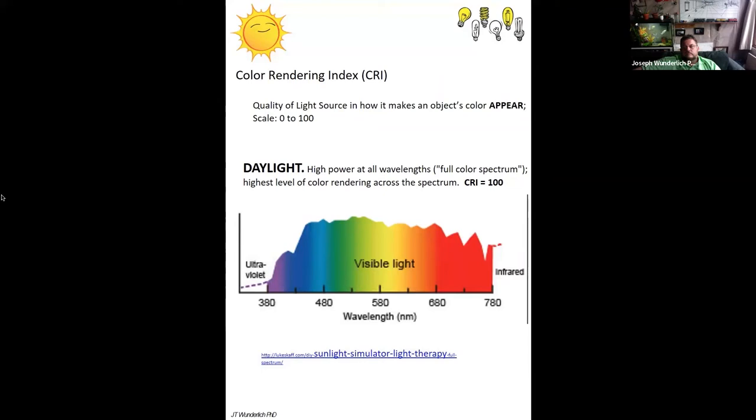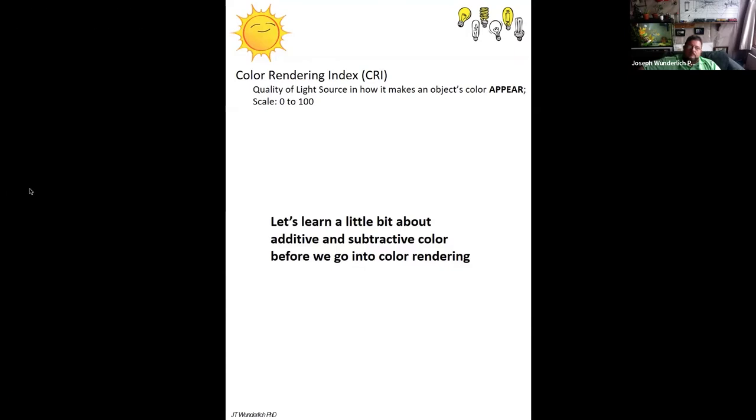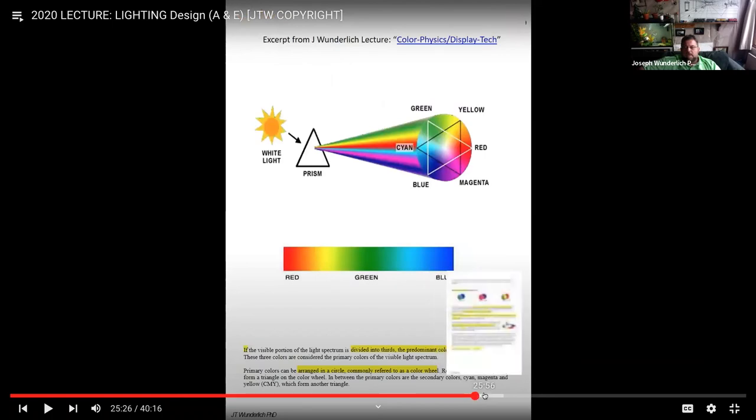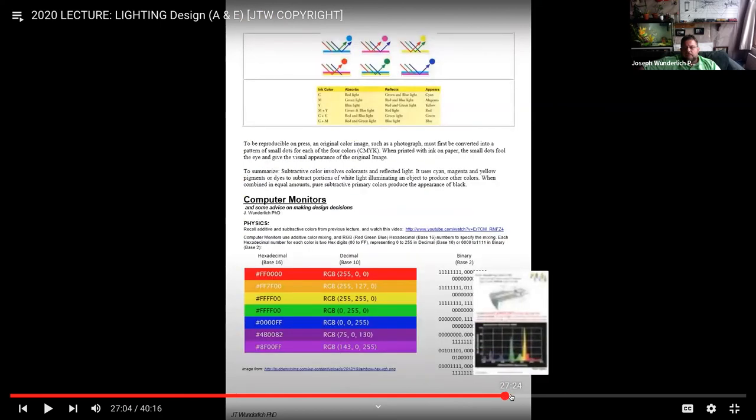We want to speak about the color rendering index. This is very important to what you see and how things actually appear. It's on a scale 0 to 100. Daylight is going to give us the most appropriate for the way our eyes work since we've adapted to sunlight as living beings on this planet.